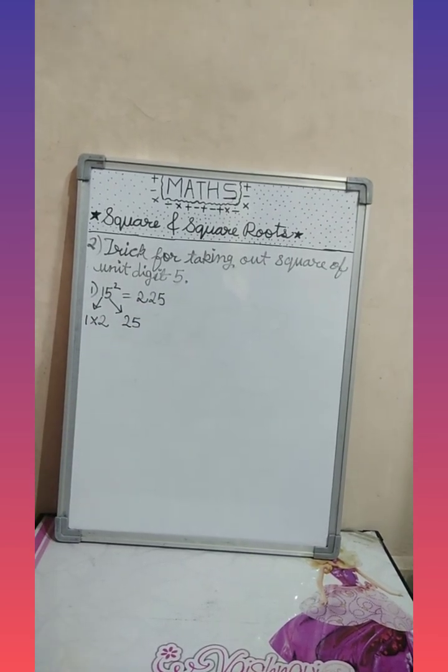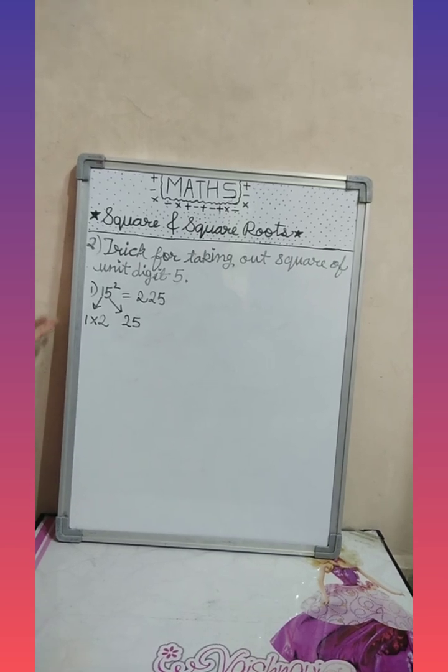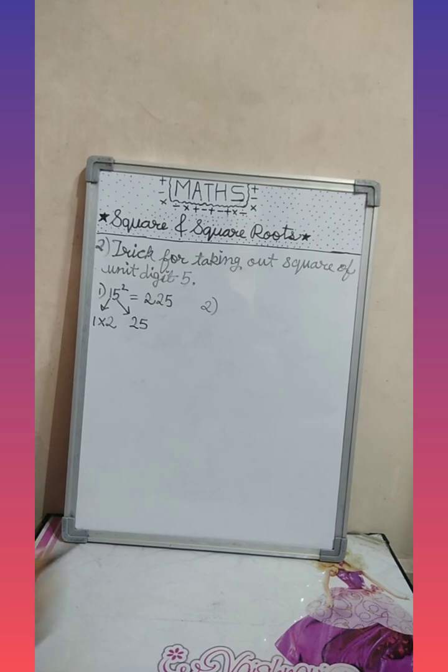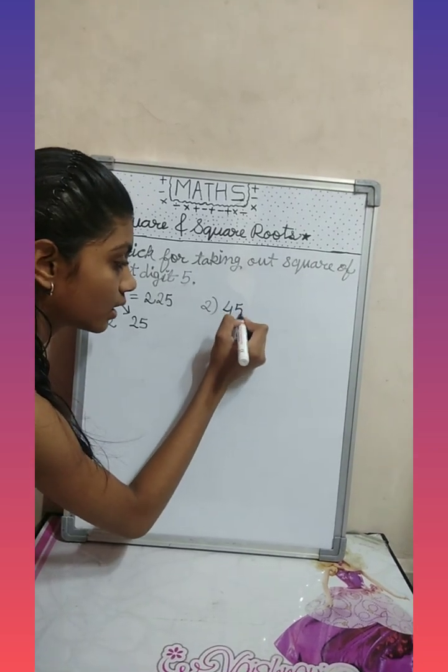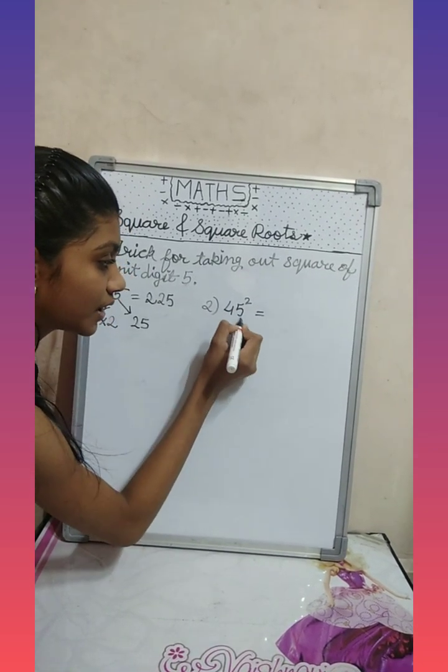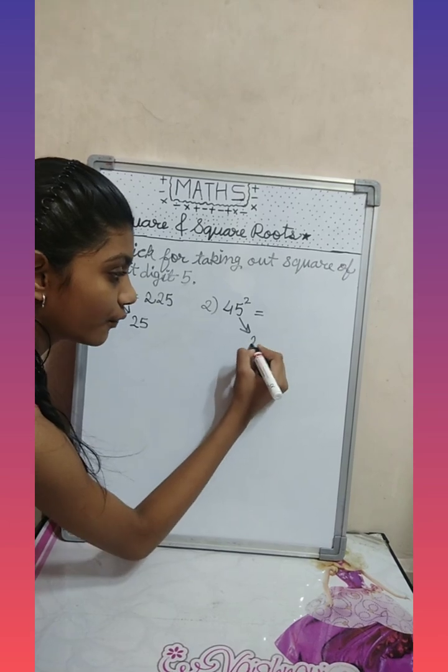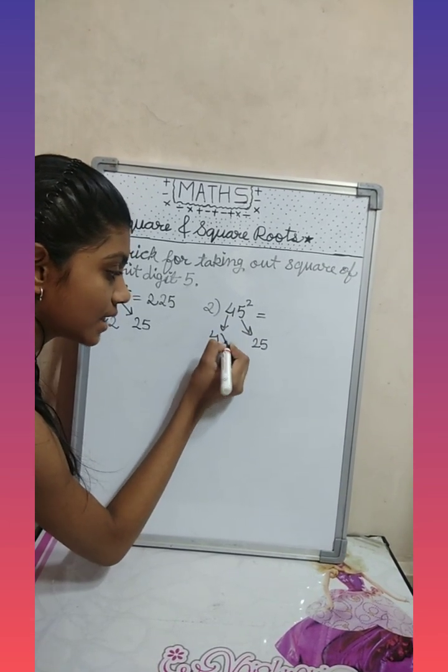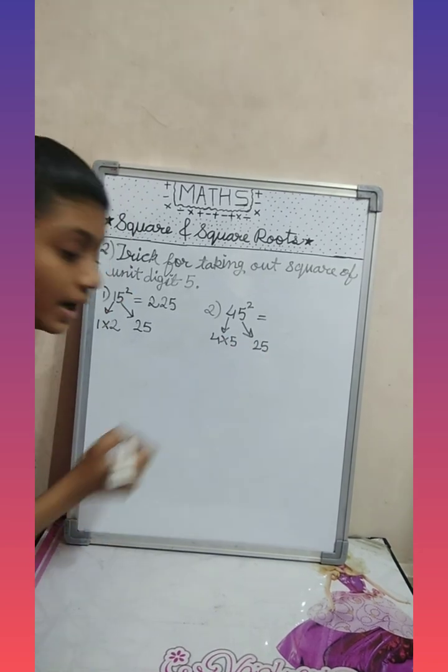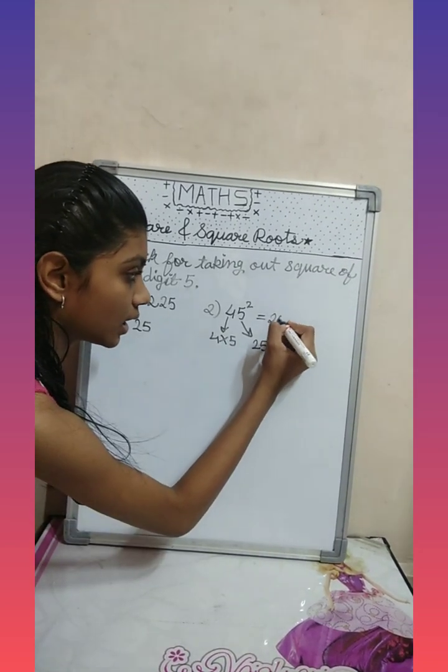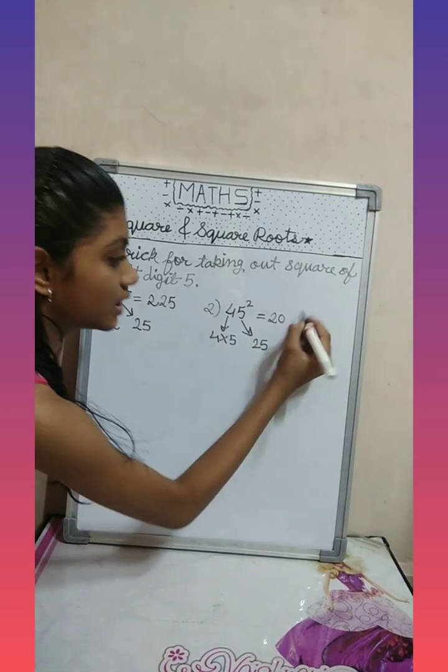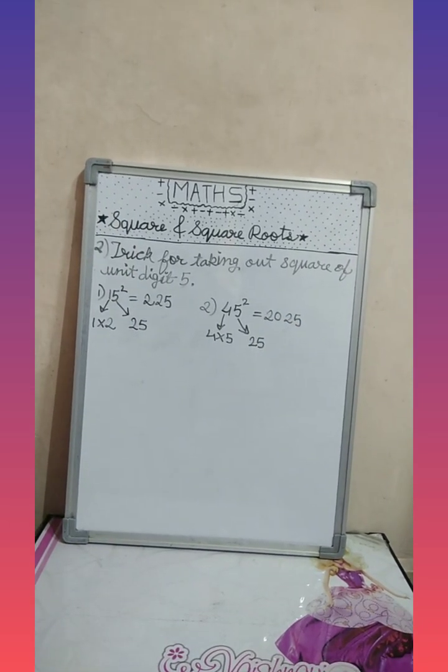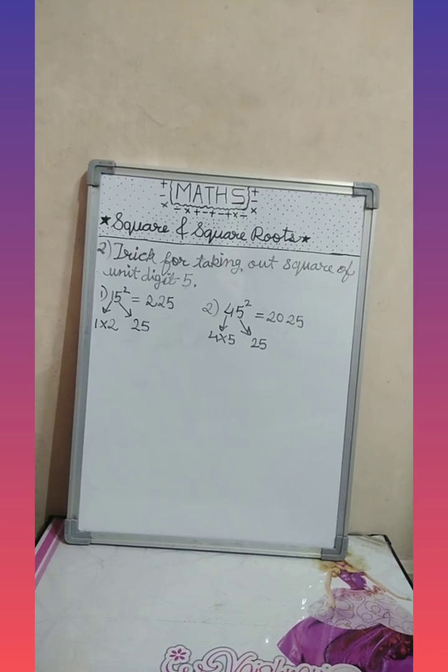Let's see one more number: forty-five. So first we will take out the square of five, which is twenty-five. And we will multiply four with its next number, with five. Four multiplied by five is twenty, and five square is twenty-five. So we got the square of forty-five, it is two thousand and twenty-five.